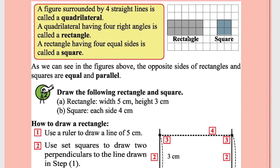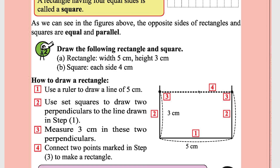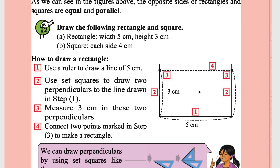In a rectangle, the opposite sides are equal. In a square, each side is equal. Let's see how to construct a rectangle — a rectangle of width 5 cm and height 3 cm.